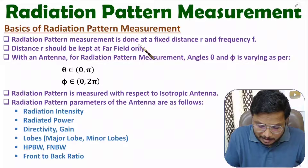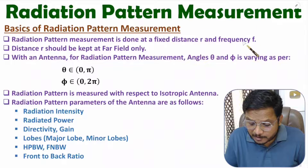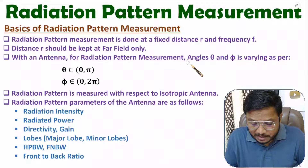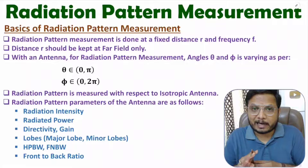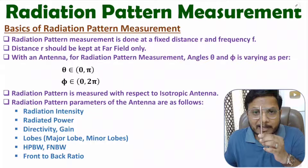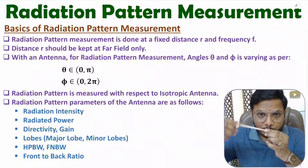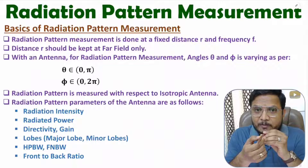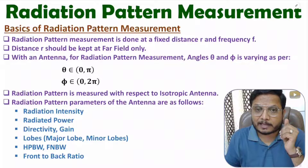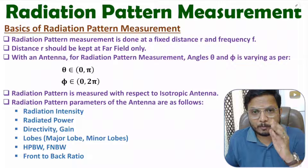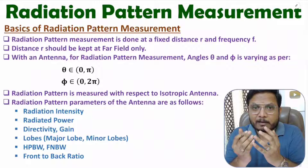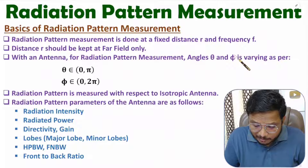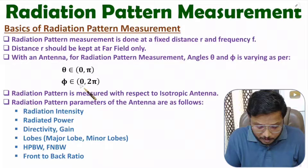Radiation pattern measurement is done with fixed distance r and fixed frequency f, where distance r is in the far field. With the measurement we change angle theta and phi. Theta is the angle with respect to the vertical z-axis, changing from 0 to π. Phi is the horizontal angle in the xy-plane with respect to the x-axis, changing from 0 to 2π. By varying theta and phi over these ranges, we can cover the complete surrounding of the antenna.